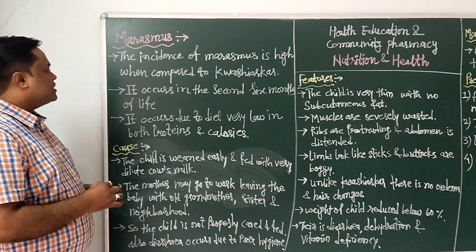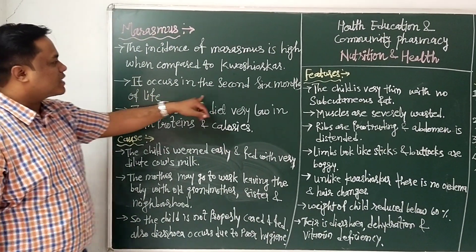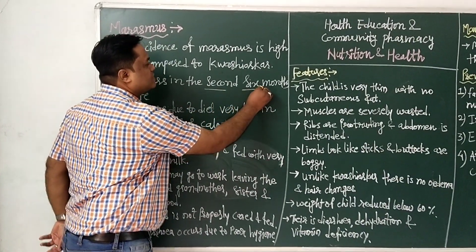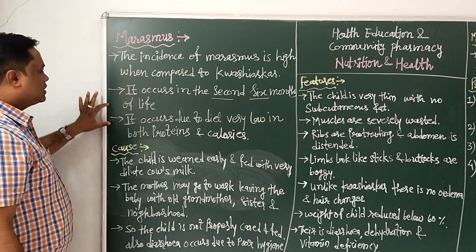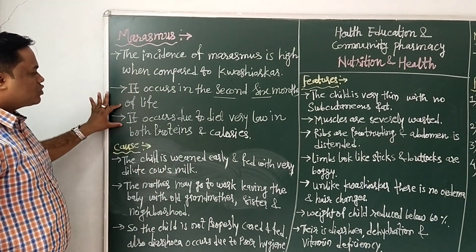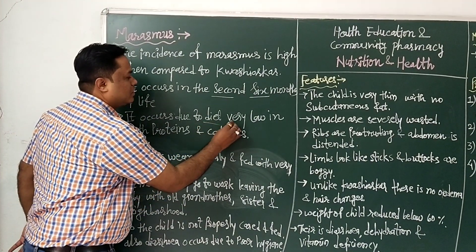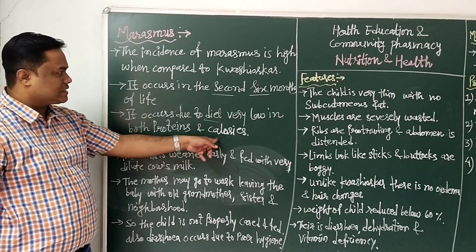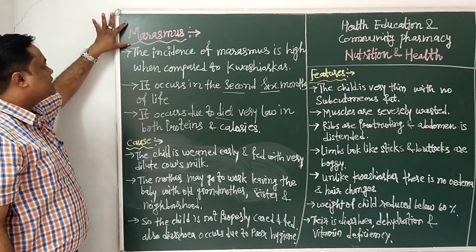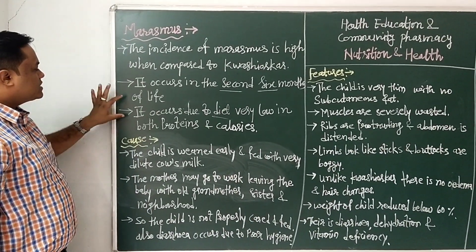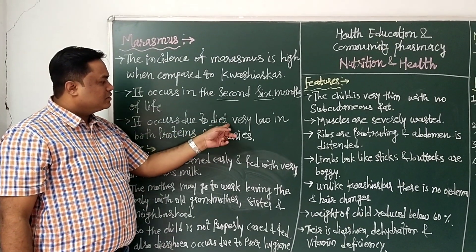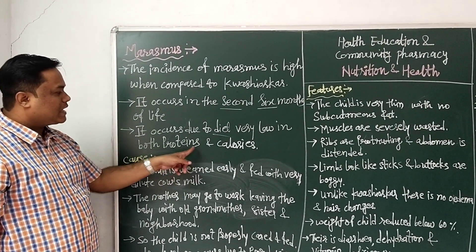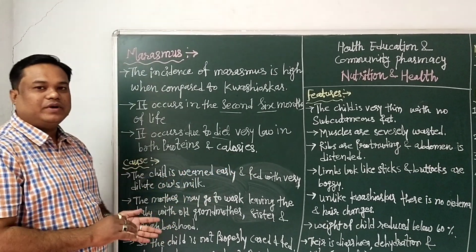Marasmus occurs in the second six months of life — this is an important point. It occurs due to a diet very low in both protein and calories. Calories here refers to nutrients and vitamins being insufficient in the diet.